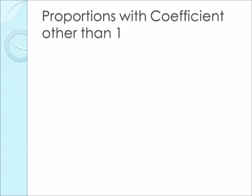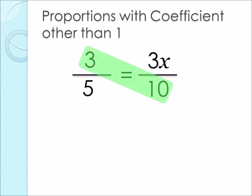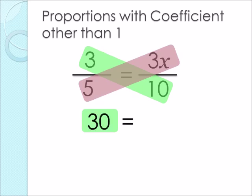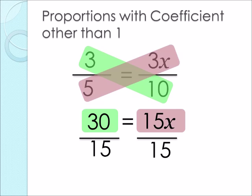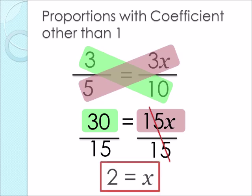Now let's talk about proportions with coefficients other than 1. Here we have 3 over 5 equal to 3x over 10. Using cross-multiplication: 3 times 10 gives us 30, and 5 times 3x gives us 15x. To solve for our variable, we isolate it using inverse operations. Since 15x shows invisible multiplication, we divide both sides by 15. The 15s cancel out, leaving just x. 30 divided by 15 gives us 2, so x equals 2.